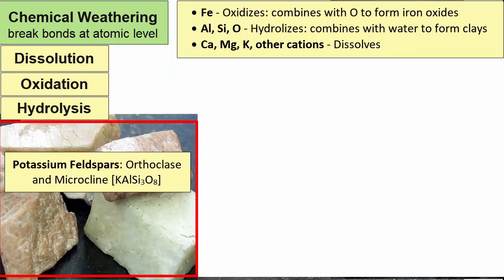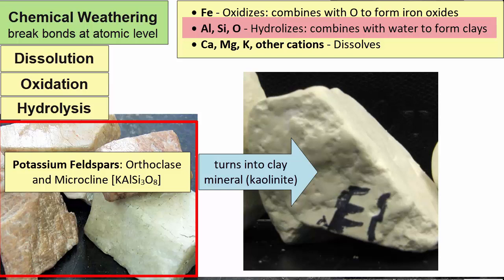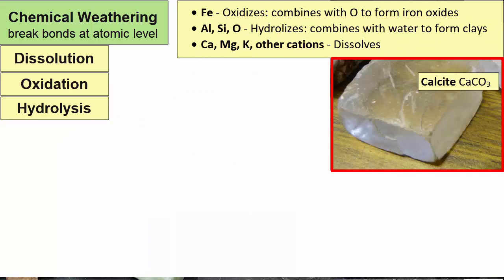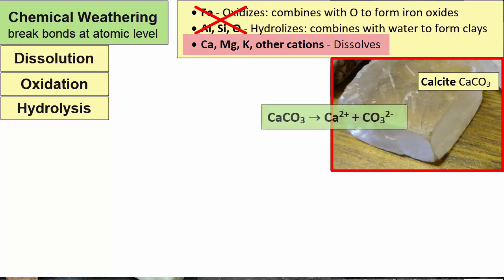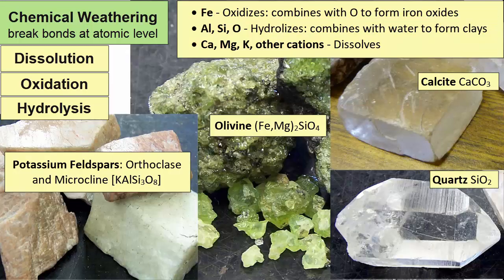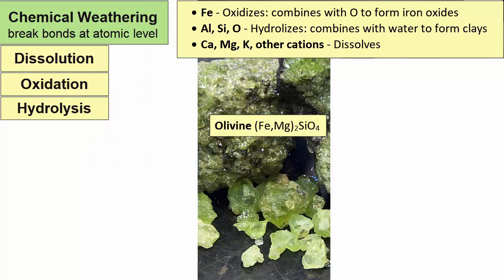Potassium feldspar, KAlSi3O8, because of the presence of aluminum, silicon, and oxygen altogether in the same mineral, will turn into a clay mineral. The potassium (K) will dissolve and be removed in water. What about calcite, CaCO3? No iron, so no rust. No AlSiO together, so no clay formation. Calcite simply dissolves into Ca2+ (calcium) and CO3 2- (carbonate), both of which are removed by the water. For a mineral that will rust, let's look at olivine, FeMg2SiO4. The iron (Fe) rusts, and the rest is dissolved and removed by water.